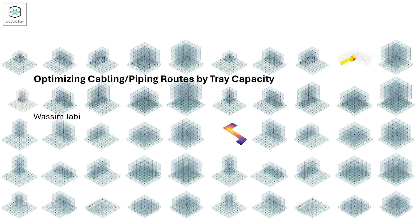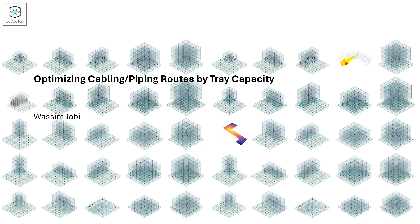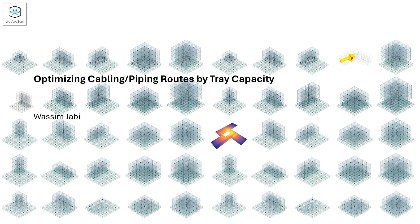In this video I'd like to share a tutorial on how to optimize cabling or piping routes by tray capacity. This is of relevance to MEP engineers who are trying to route cables or pipes through a building. They may have an existing installation with remnant capacities for the trays that carry pipes, and they would like to find the optimal routes for those pipes.